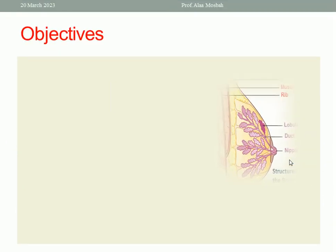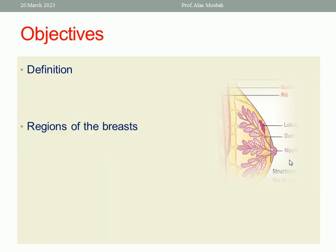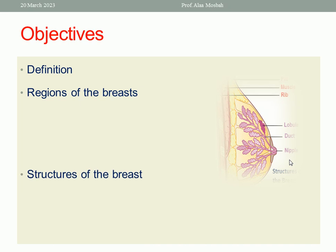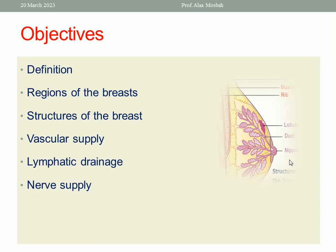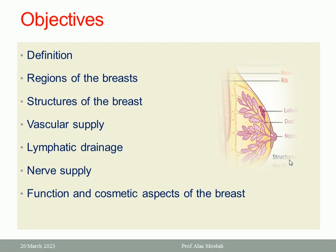It is very important to know the anatomy of the breast. Today's objectives are: the definition of the breast, regions of the breast, structure of the breast, the vascular supply, lymphatic drainage, nervous supply of the breast, and lastly, the function and cosmetic aspect of the breast.